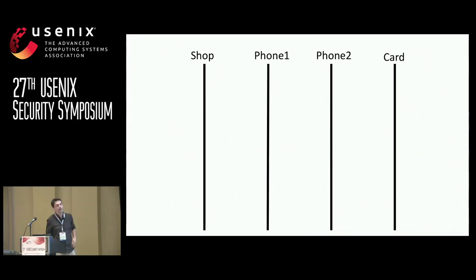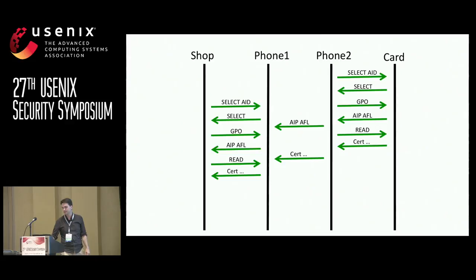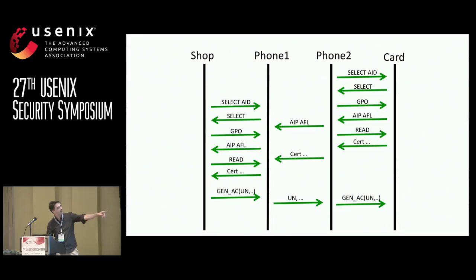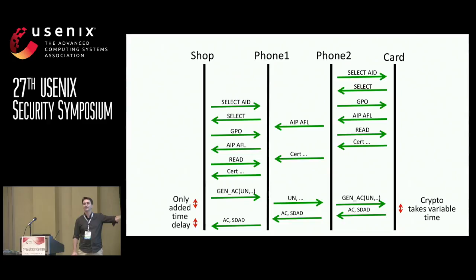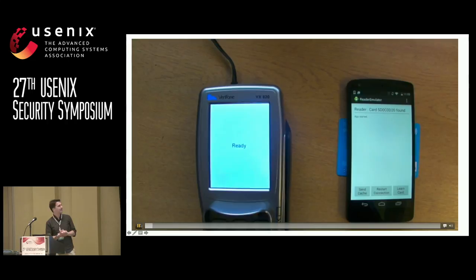However, this protocol is fantastic for being relayed, because almost all of these steps can be cached or done out of order. If I want to relay this card to the shop with a couple of phones, I can start the session with the card first, then send the data for the relay before it's needed. I can do this with everything apart from one random number — that's the only thing I have to properly relay. So very little time is added to relay this because of the design of the protocol. Even worse, the one step you relay requires the card to do a lot of crypto, which takes a very variable amount of time. It's very hard to predict how long a smart card will take to do crypto.